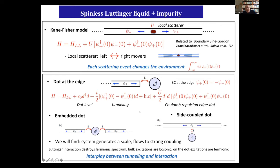One can have many other very interesting geometries — for example, if the dot is embedded so you can have conductance across it, or a side-coupled dot. What's interesting in these systems is that the spectrum consists of bosonic collective modes, but the tunneling is via fermions — the bosons have to recombine to form bosonic excitations in order to tunnel. So there is an interesting interplay between tunneling and interaction.